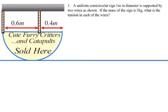This is problem number one in sample test number four. A uniform semicircular sign one meter in diameter is supported by two wires as shown. If the mass of the sign is five kilograms, what is the tension in each of the wires?